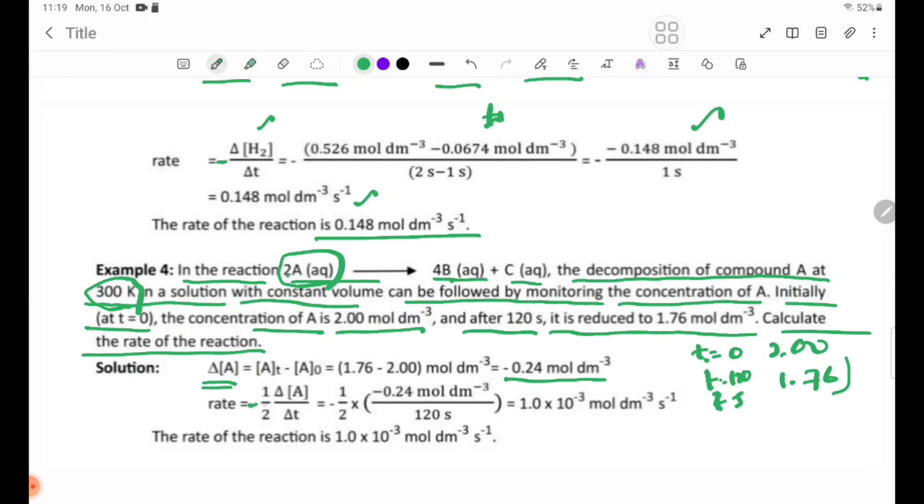Rate = -1/2 × (-0.24 mol/dm³ ÷ 120 s) = 1.0 × 10⁻³ mol/dm³/s. The rate of the reaction is 1.0 × 10⁻³ mol/dm³ per second.